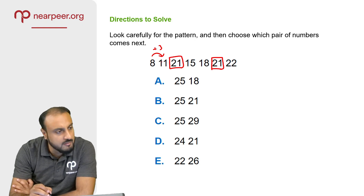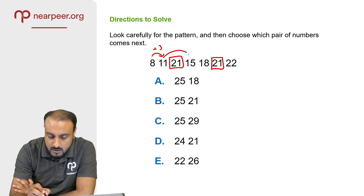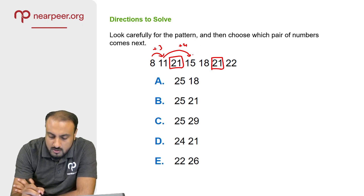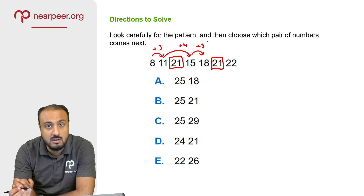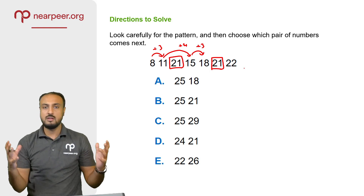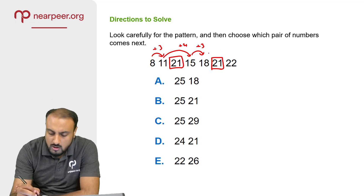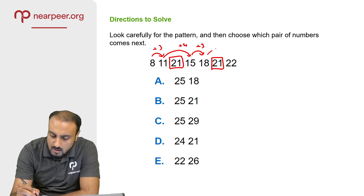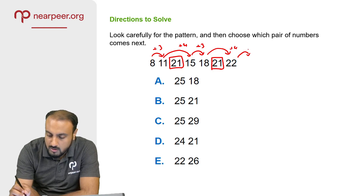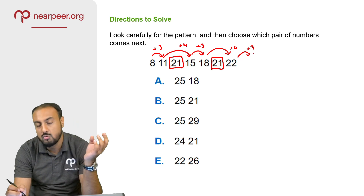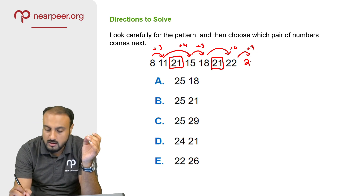The series continues: 11, 12, 13, 14, 15 — we go forward. Then 15, 16, 17, 18 — again forward. So the pattern is plus 3 each time. Plus 3, plus 3 — 22, 23, 24, 25. So the next numbers are 25.